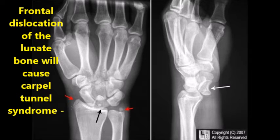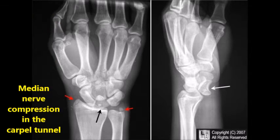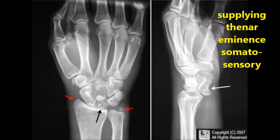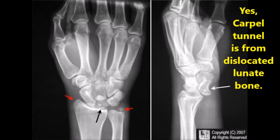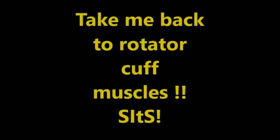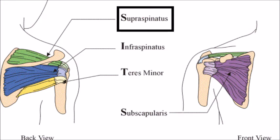Frontal dislocation of the lunate bone will cause carpal tunnel syndrome — median nerve compression in the carpal tunnel. The thenar eminence branches pass through the carpal tunnel, supplying the thenar eminence with somatosensory and motor function. Carpal tunnel syndrome is from dislocated lunate bones.